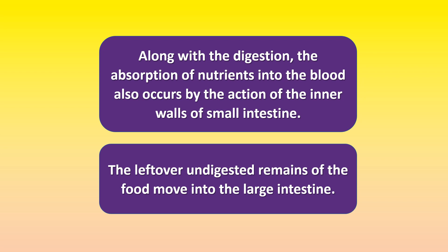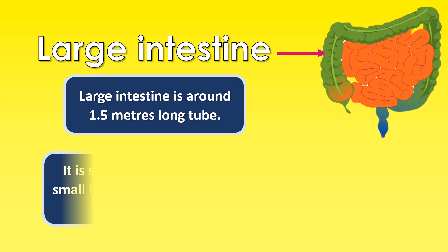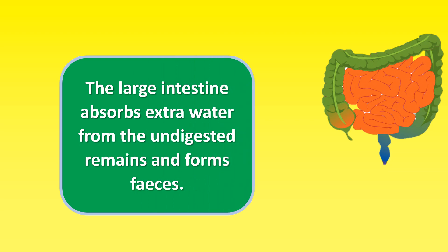The leftover undigested remains of the food move into the large intestine. The large intestine is around 1.5 meters long. It is shorter in length than the small intestine, but is much wider. The large intestine absorbs extra water from the undigested remains and forms feces. Feces from here passes to the rectum. From the rectum, feces are excreted by the anal opening, or anus, to the outside of the body.